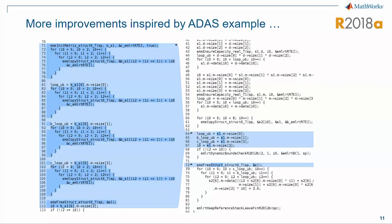We continued in 18a to look at that ADAS example because it really highlighted some inefficiencies in the generated code. So we were able to deliver more improvements in 18a and we're continuing to look at that example and computer vision examples going forward.